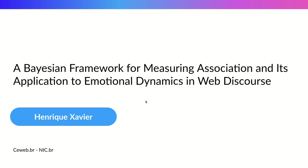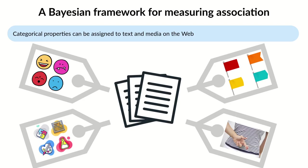I'm Henrique Xavier and I'll talk about a Bayesian framework for measuring association between categorical variables. Text and media on the web can be assigned labels like emotions or topics, political stances, or policies being promoted, and can be labeled for this information.